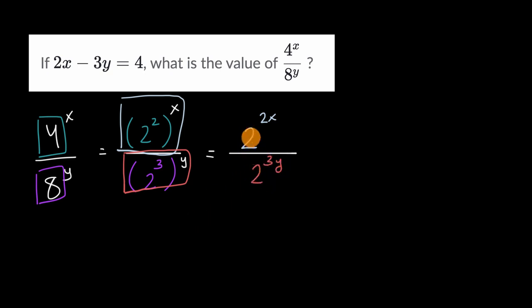Now we have the same base, and we can use other exponent properties. You might recognize that if I have a to the x over a to the y, this is the same thing as a to the x minus y. And we explain the intuition of that in other videos on Khan Academy, but we can use that property right over here. We have the same base.